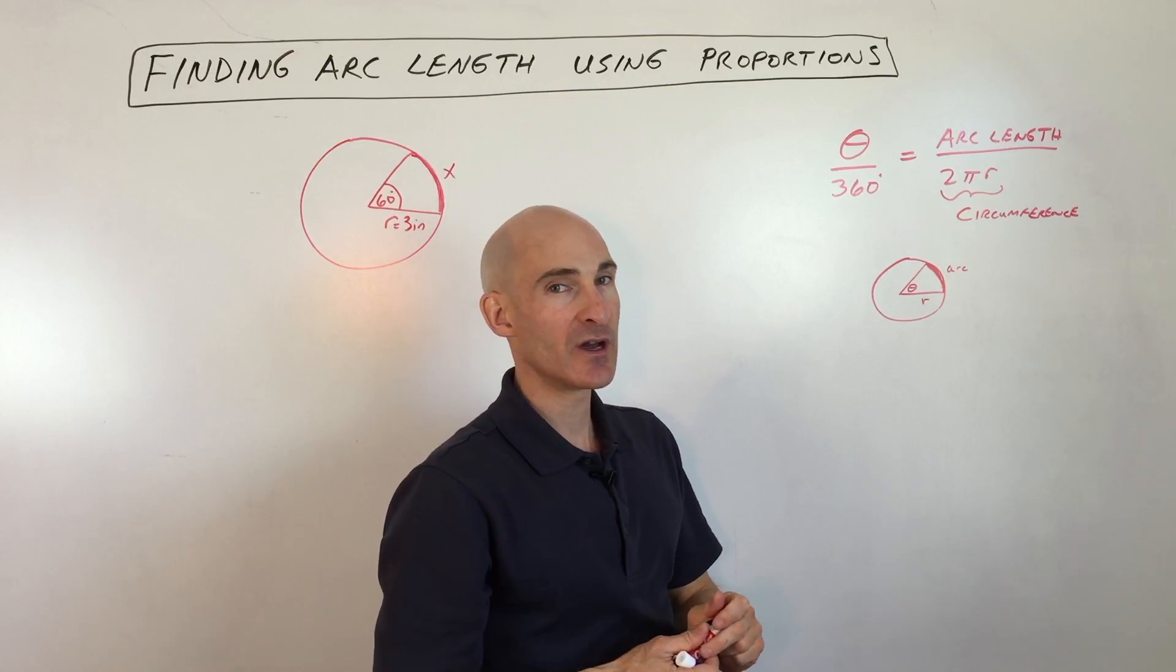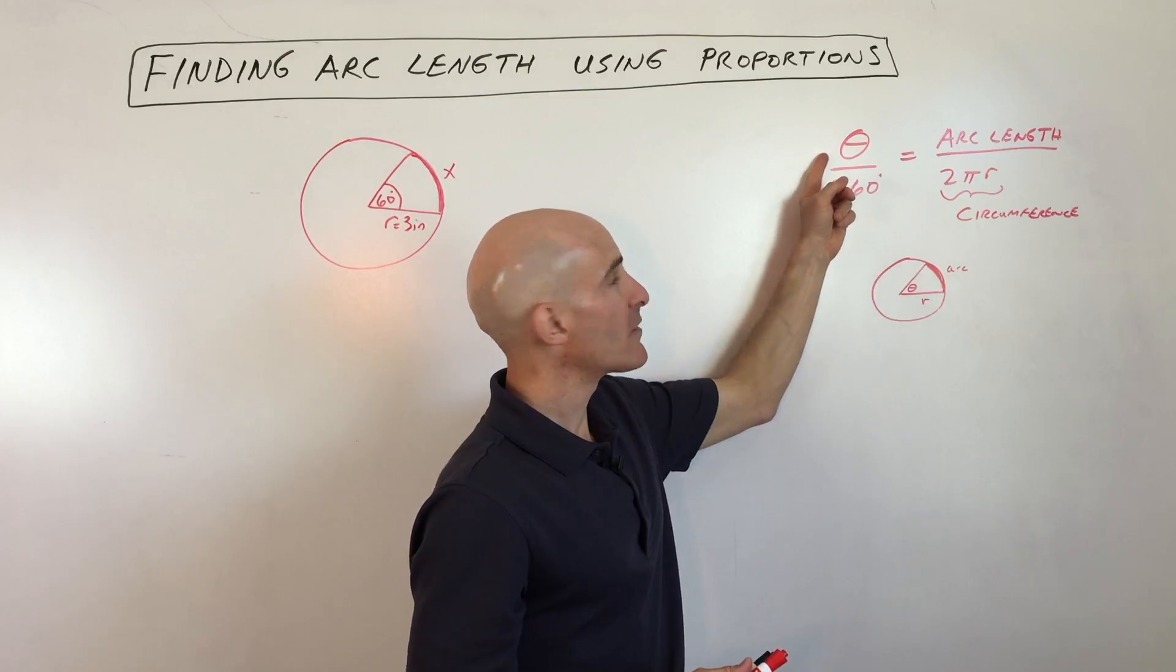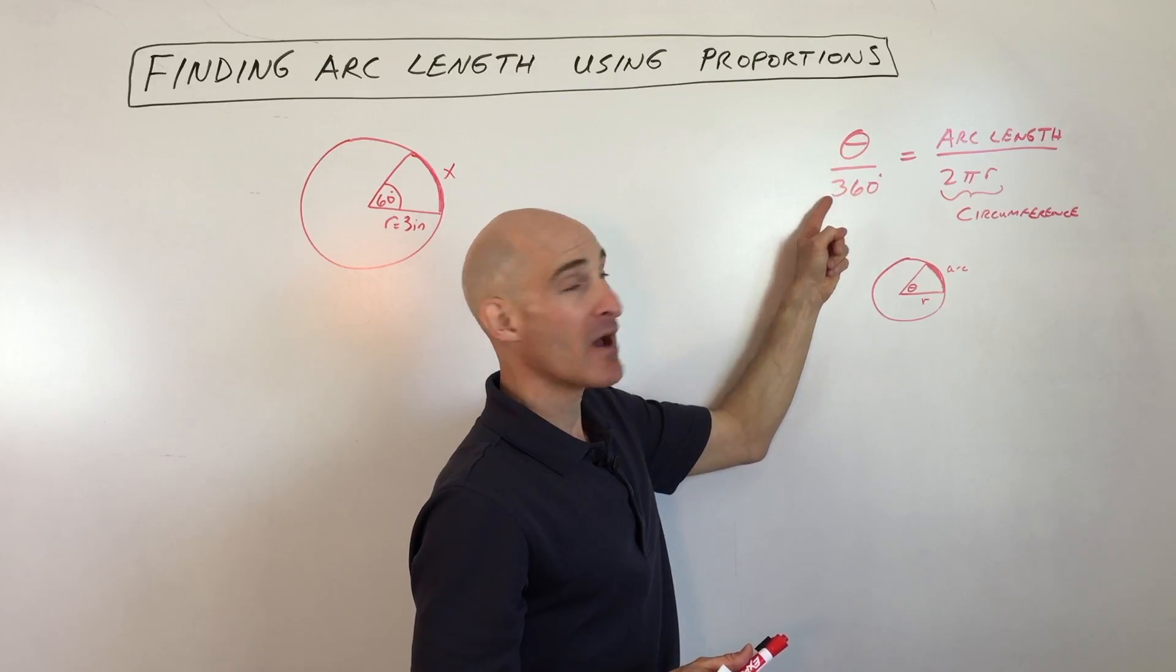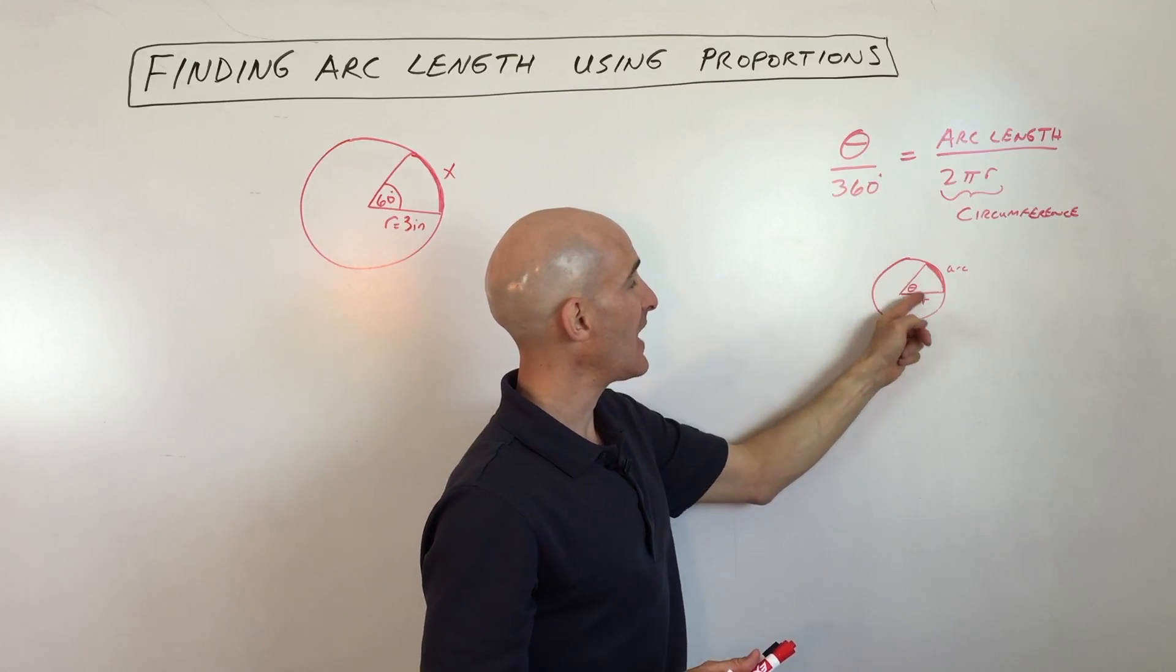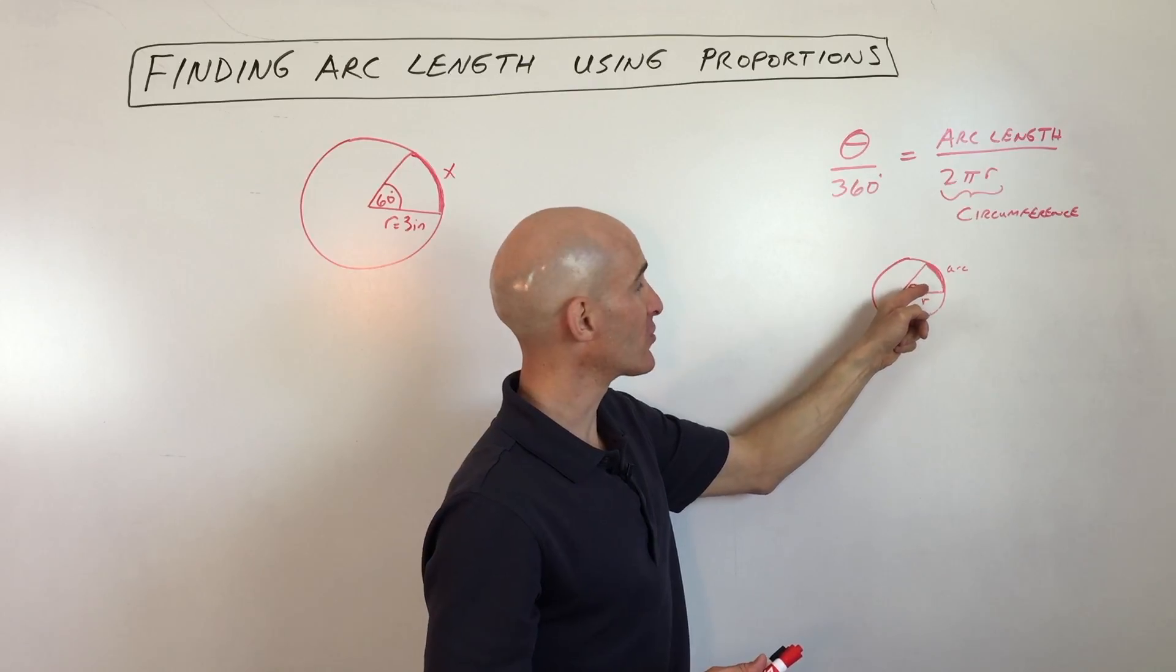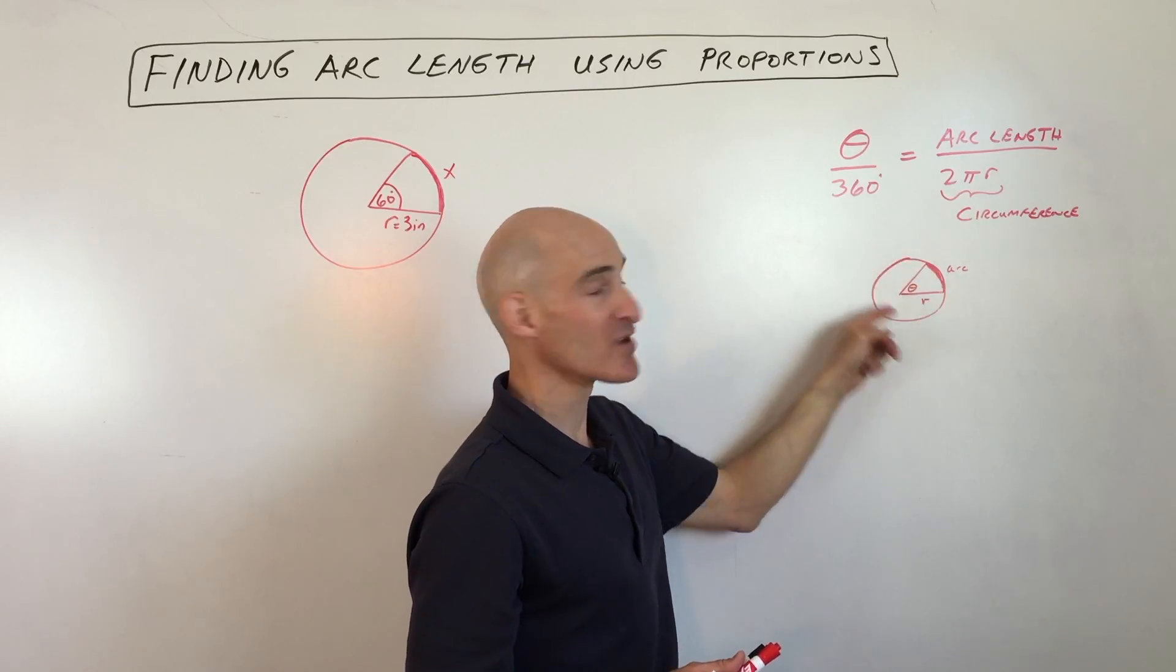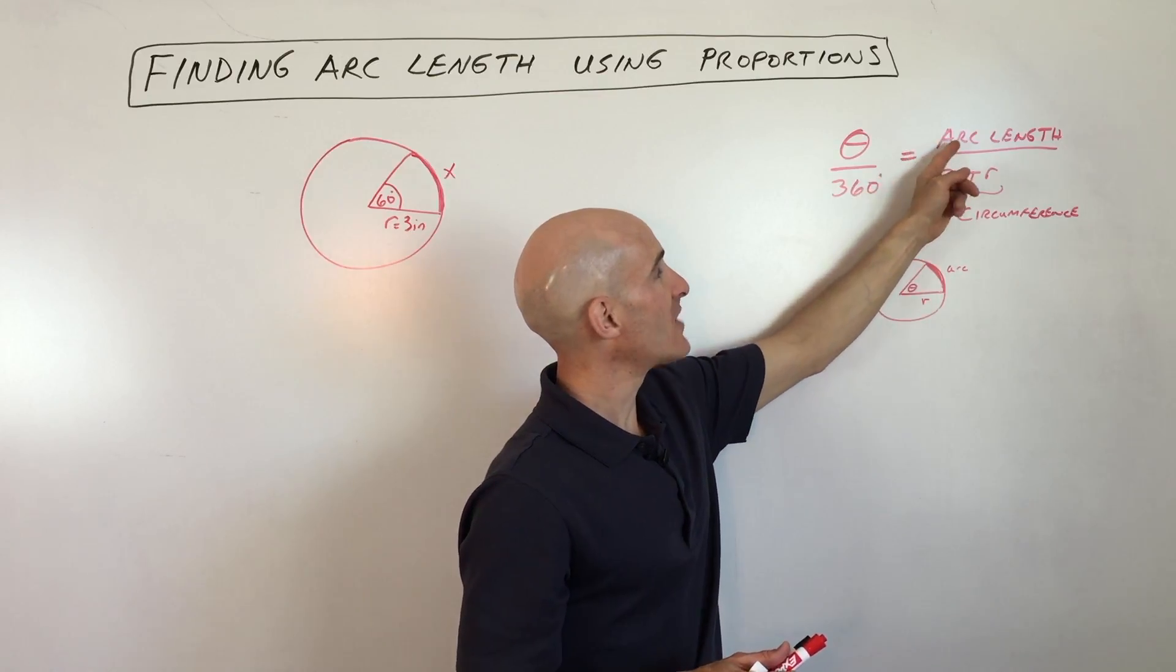Just to help you understand a little bit deeper, what we're doing is making a proportion because we have the fraction divided by the whole. See, theta is this angle, that's the fraction of the whole circle divided by 360, that's the entire number of degrees of the circle, equals the arc length.